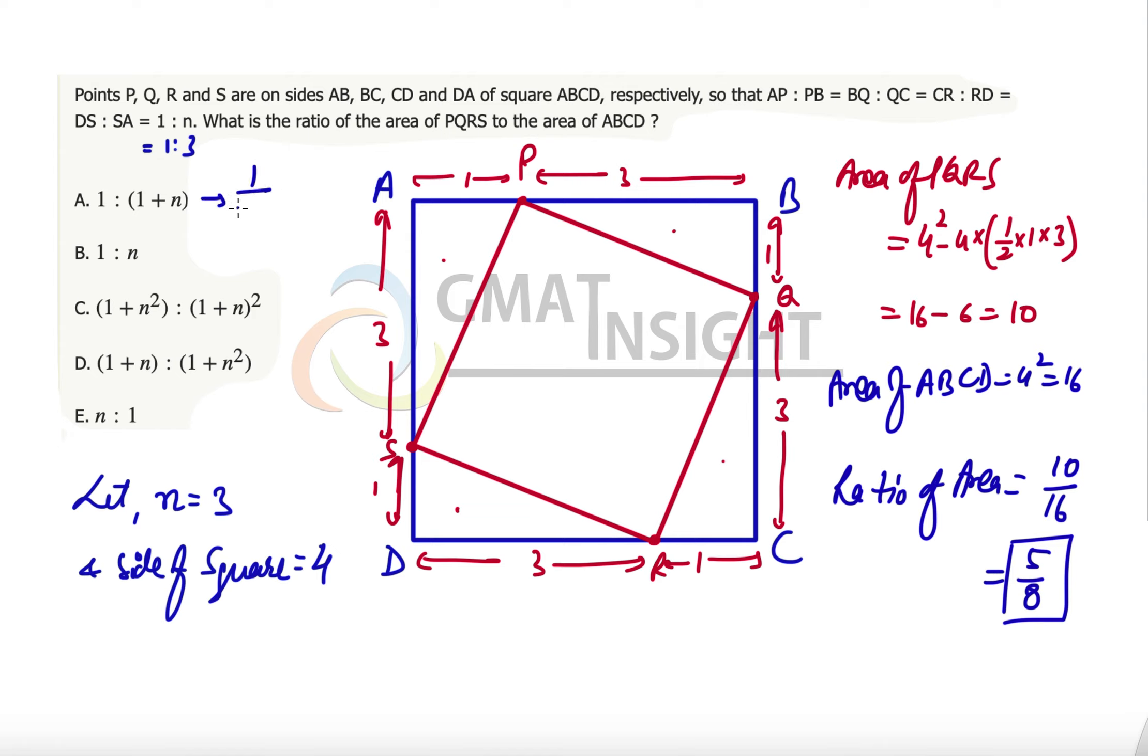Let's go to the first option: that is 1 over 1 plus 3, that is 1 by 4, not 5 over 8. So this option is out. Option B is 1 over 3, not 5 over 8. Out. This option is 3 over 1, no, out.